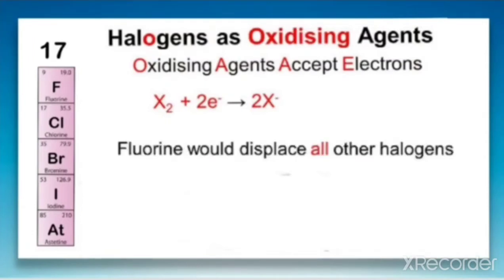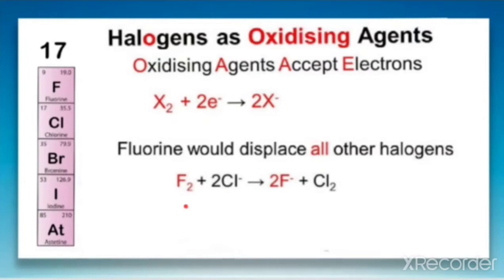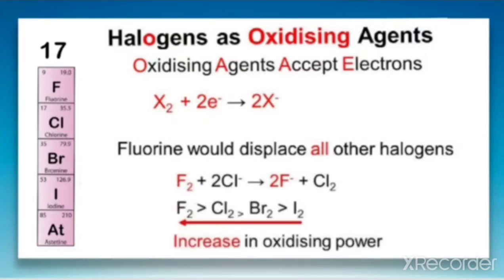Fluorine displaces all other halogens, which shows that fluorine is a stronger oxidizing agent than the others. In this equation, fluorine displaces chloride ion to form chlorine, so fluorine acts as an oxidizing agent here. Comparing the oxidizing nature, fluorine is the strongest oxidizing agent and iodine is the weakest oxidizing agent.